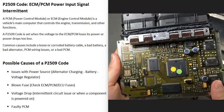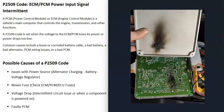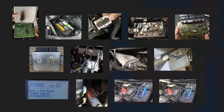The last possible cause is a bad PCM or ECM — the computer itself has gone bad. This isn't very common with a P2509 code, but it is possible. If you suspect this, check around the computer for a burnt smell, or open it up and look for burnt components. Burnt components are common when these computers fail, though they can also fail without any visible damage.